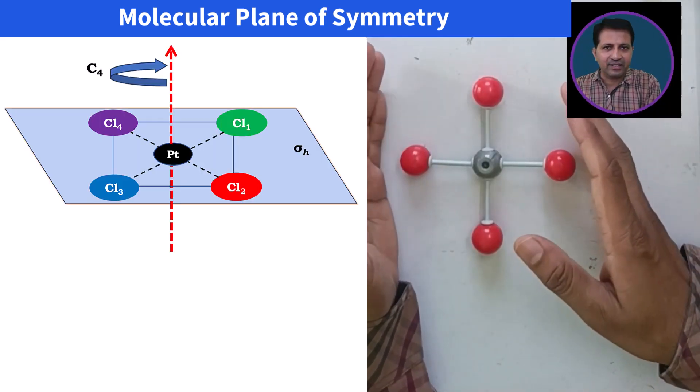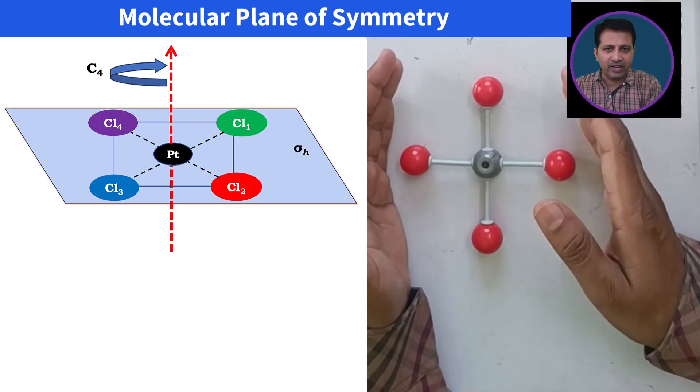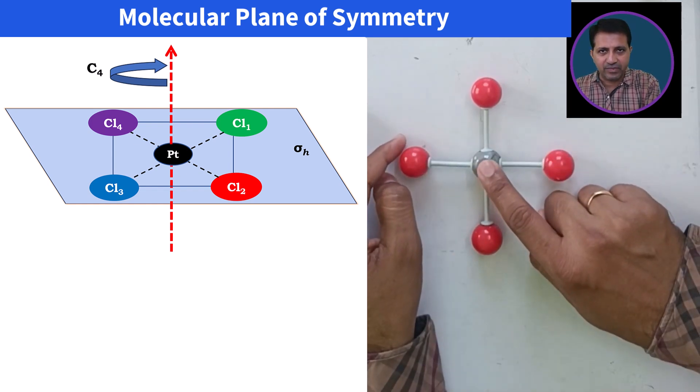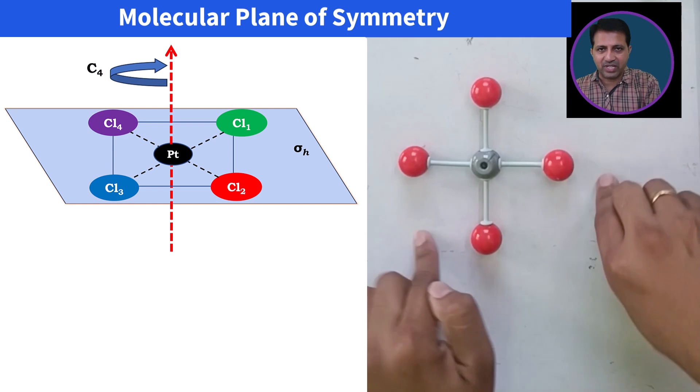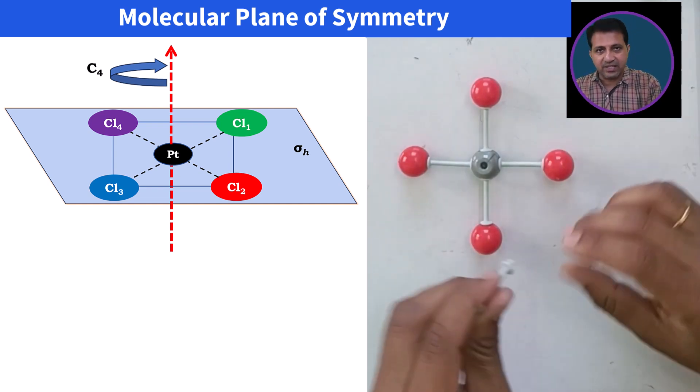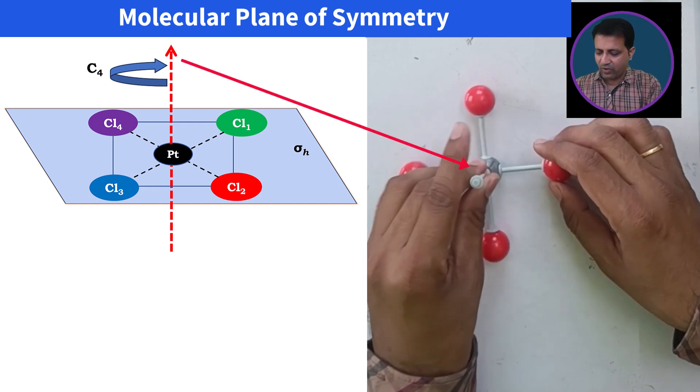Let's understand the concept of molecular plane using this model where at the center platinum atom is present and at the outside red colored chlorine atoms are present. I pass an axis through this molecule.